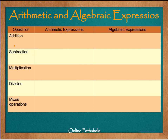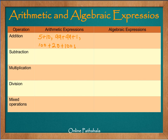Let us start with addition. We will limit ourselves to whole numbers to keep things simple. For arithmetic expressions involving addition, we can write: 5 plus 10, or 99 plus 99 plus 1, or 100 plus 20 plus 100. These are all examples of arithmetic expressions.